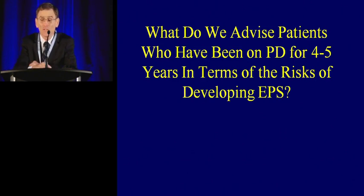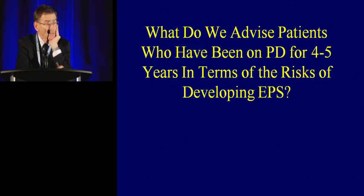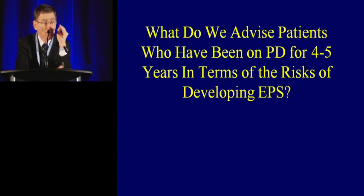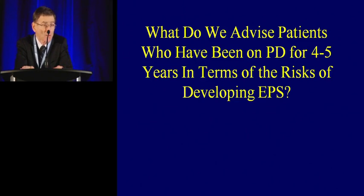Only 50% of PD patients are still on PD at two years, and in most series only 10–20% make it to five years, so EPS has not gotten enough attention. We've now decided to go back with patients who've been on PD for about four years and begin discussing the risk of EPS — that after five years it can occur in up to 20% of long-term patients. We need to develop strategies to minimize that risk, primarily by limiting dextrose exposure.